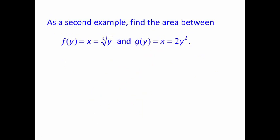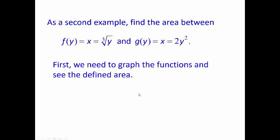Let's find the area between f(y), where x equals the cube root of y, and g(y), where x equals 2y squared. Notice how these are defined in terms of y, not in terms of x. This blue line here is x equals the cube root of y, and in red, this is x equals 2y squared. This makes sense because it's defined in terms of y — it's like a parabola flipped on its side.